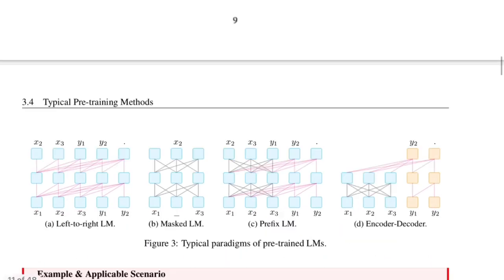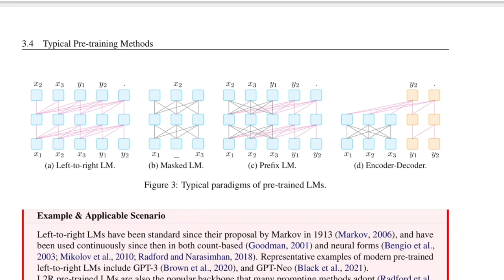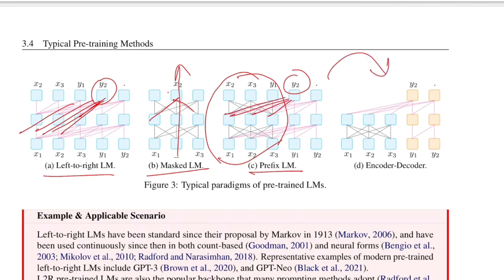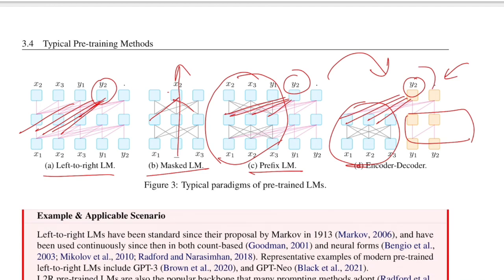They also discuss pre-training methods: left-to-right with the masked objective and bidirectional. The left-to-right approach — as seen in the attention mask — at any time T can only see past words. Masked language modeling lets any word attend to all other words in context. The prefix language model has prefix words using full attention, and predicted words attend to prior generated words plus prefix tokens. For encoder-decoder architecture, self-attention in the encoder allows all tokens to attend to each other, while decoder tokens also attend to all encoder inputs and previous time steps.